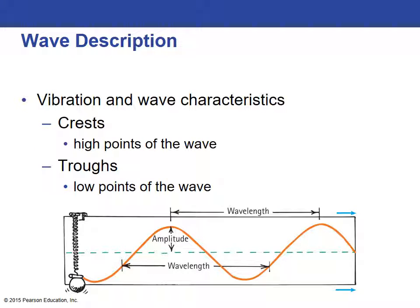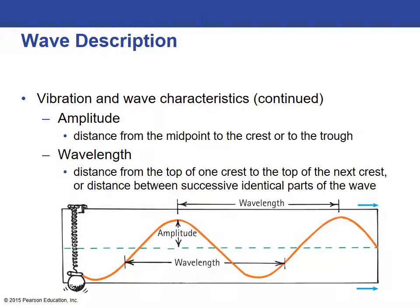Vibrations and waves have specific characteristics. The high point on a wave is called the crest; the low point is called the trough. The amplitude is the distance from the midpoint to the crest or midpoint to the trough. The wavelength is the distance from the top of one crest to the top of the next crest, or the distance between any identical parts of the wave.